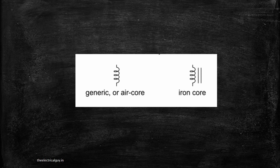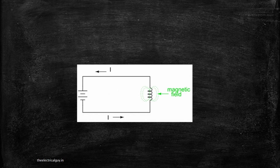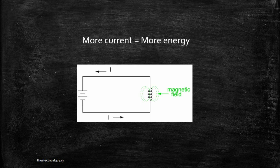These are some basic symbols of the inductor. The first one shows the generic or air coil, which has nothing inside it. The second one shows the iron core — many inductors are wound on an iron core. We will answer why shortly. Whenever we apply voltage across the inductor or pass current through it, a magnetic field is created around it. If you want to store more energy and create more field, you have to increase the current. More current equals more magnetic field, which equals more energy storage.